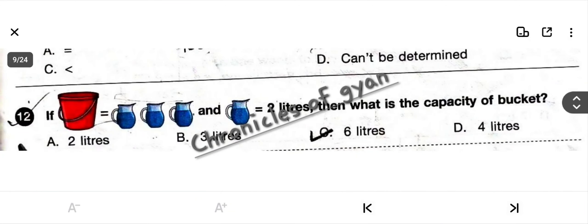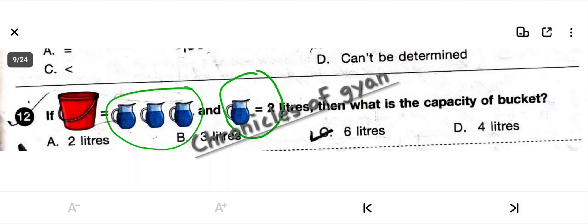Question 12: If one bucket equals 3 jugs and one jug equals 2 liters, what is the capacity of the bucket? One jug equals 2 liters, so 3 jugs equal 3 × 2 = 6 liters. The answer is option C: 6 liters.